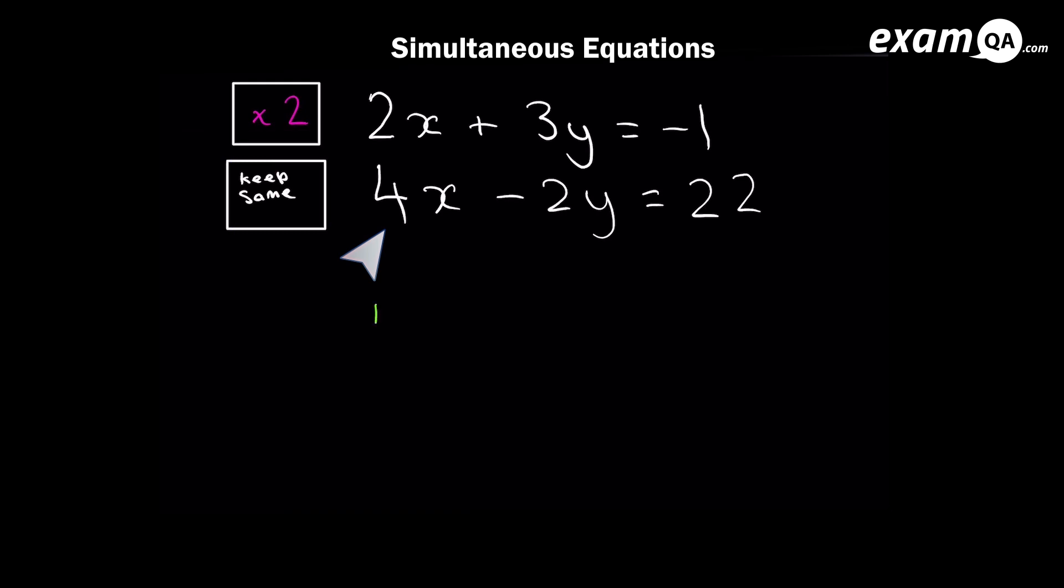So here you can see I've times the top equation by 2. And remember, I've times the whole equation by 2. So every element has been multiplied by 2. And remember, the second equation, we're going to leave it as it is because it's already 4x. So we'll just rewrite it as it is.